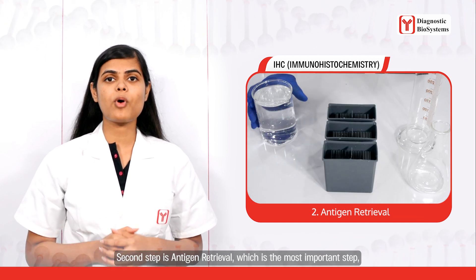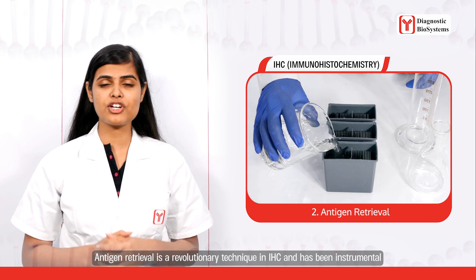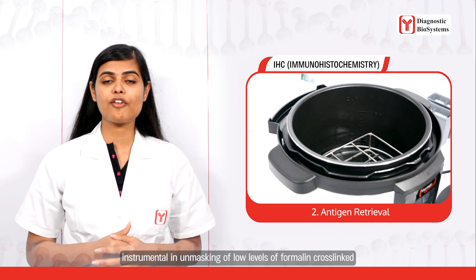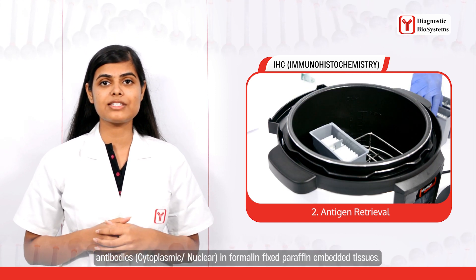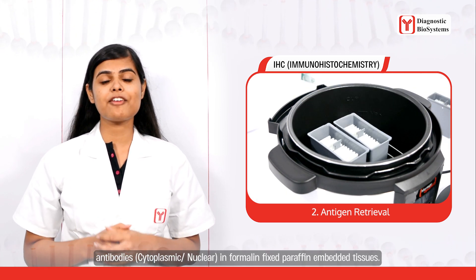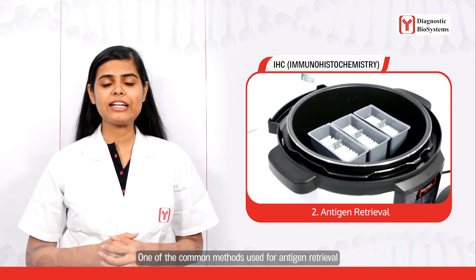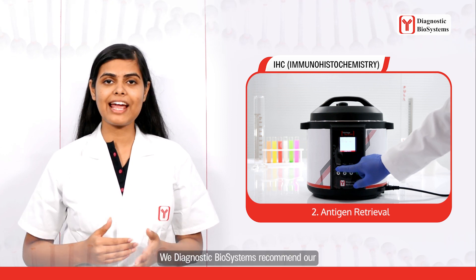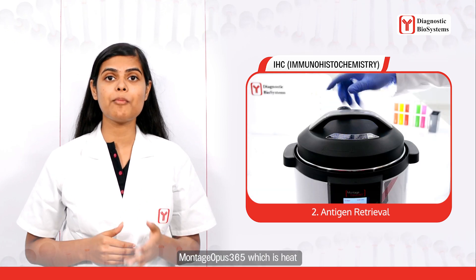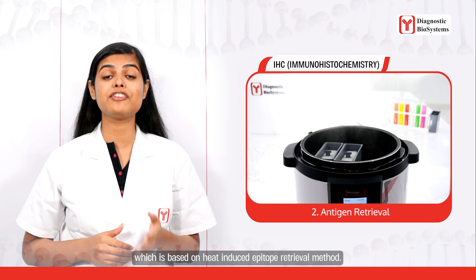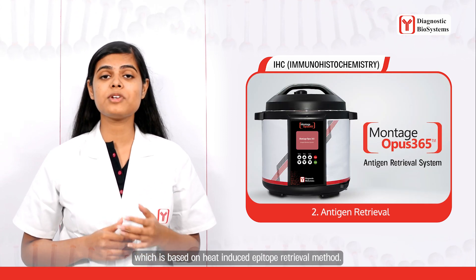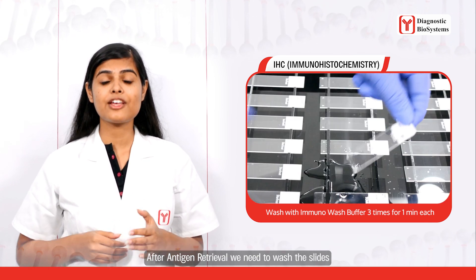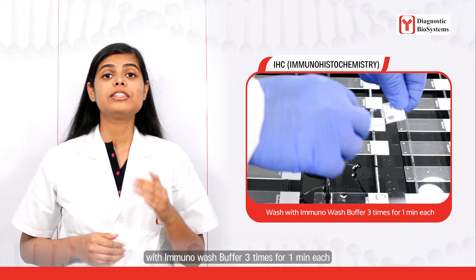The second step is antigen retrieval, which is the most important step in IHC. Antigen retrieval is a technique that has been instrumental in unmasking low levels of formalin crosslinks in formalin-fixed paraffin-embedded tissues. One common method is heat-based antigen retrieval. We at Diagnostic Biosystems recommend our Montage Opus 365, which is based on heat-induced epitope retrieval. After antigen retrieval, wash the slides with immunowash buffer three times, one minute each.